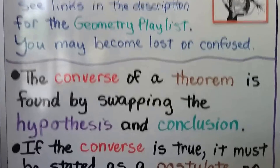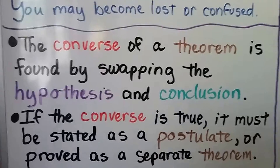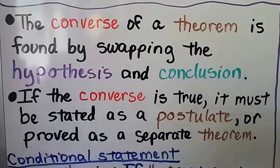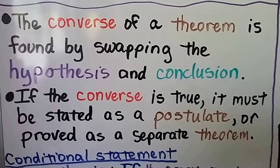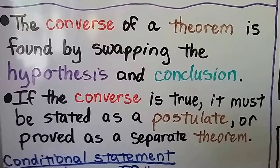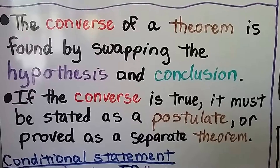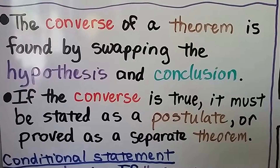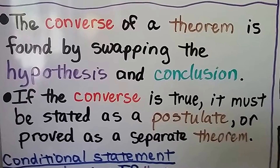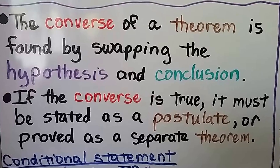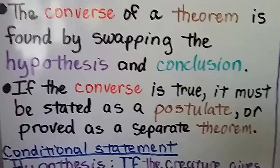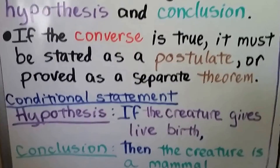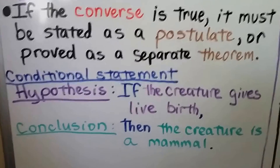The converse of a theorem is found by swapping the hypothesis and conclusion. If the converse is true, it must be stated in a postulate or proved as a separate theorem. So here we have a conditional statement.